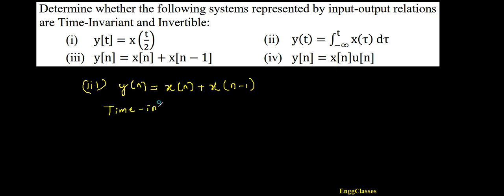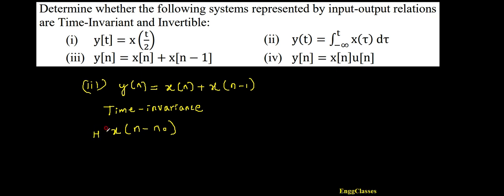First let me consider this to test for time invariance. I need to test: is this system time invariant or not? To test that, I should know the definition of time invariance, which says that a shift in the input must lead to an identical time shift in the output. Let me consider the first half of the statement: shift in the input. Input is x(n), so shift in the input is x(n - n₀).